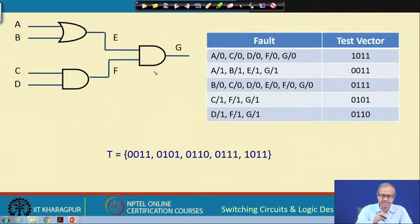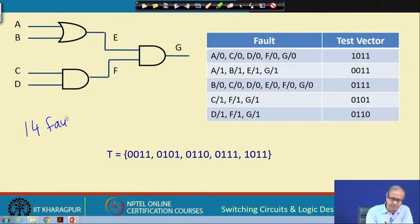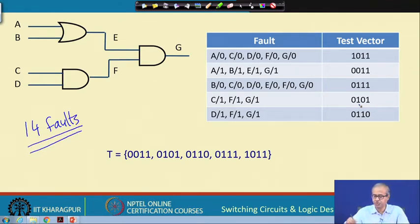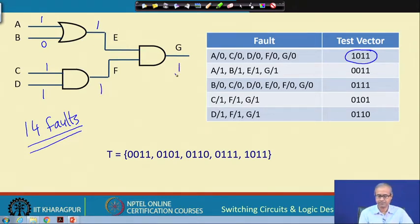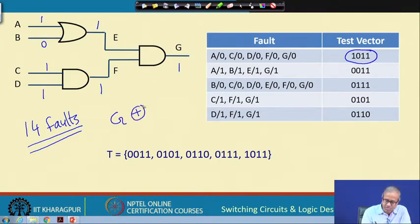Let us take an example netlist with 3 gates. There are 7 lines, so there are 14 single stuck-at faults. Consider the test vector 1011. A fault will be detected if the output G in the absence of fault XOR the output in the presence of fault is 1, meaning they differ. Since the output G is 1 with 1011, so G stuck-at-0 will be detected.